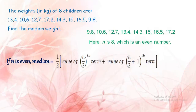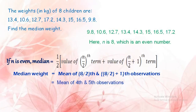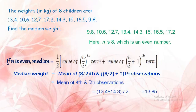We are going to find the mean of the middle two terms. Here, n = 8, so median = mean of the 4th and 5th observations. The 4th observation is 13.4 and the 5th observation is 14.3. The mean of these two observations is (13.4 + 14.3) / 2 = 13.85. So, the median weight is 13.85 kilograms.